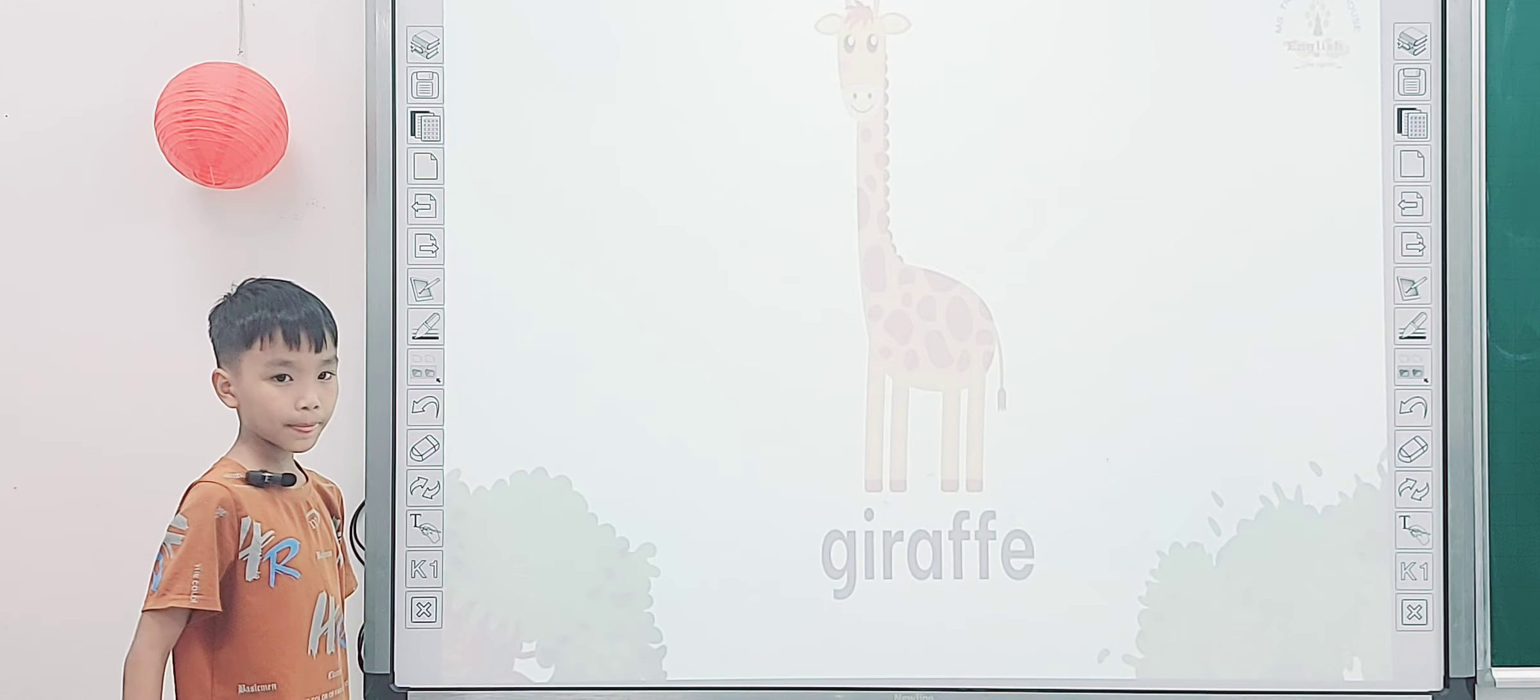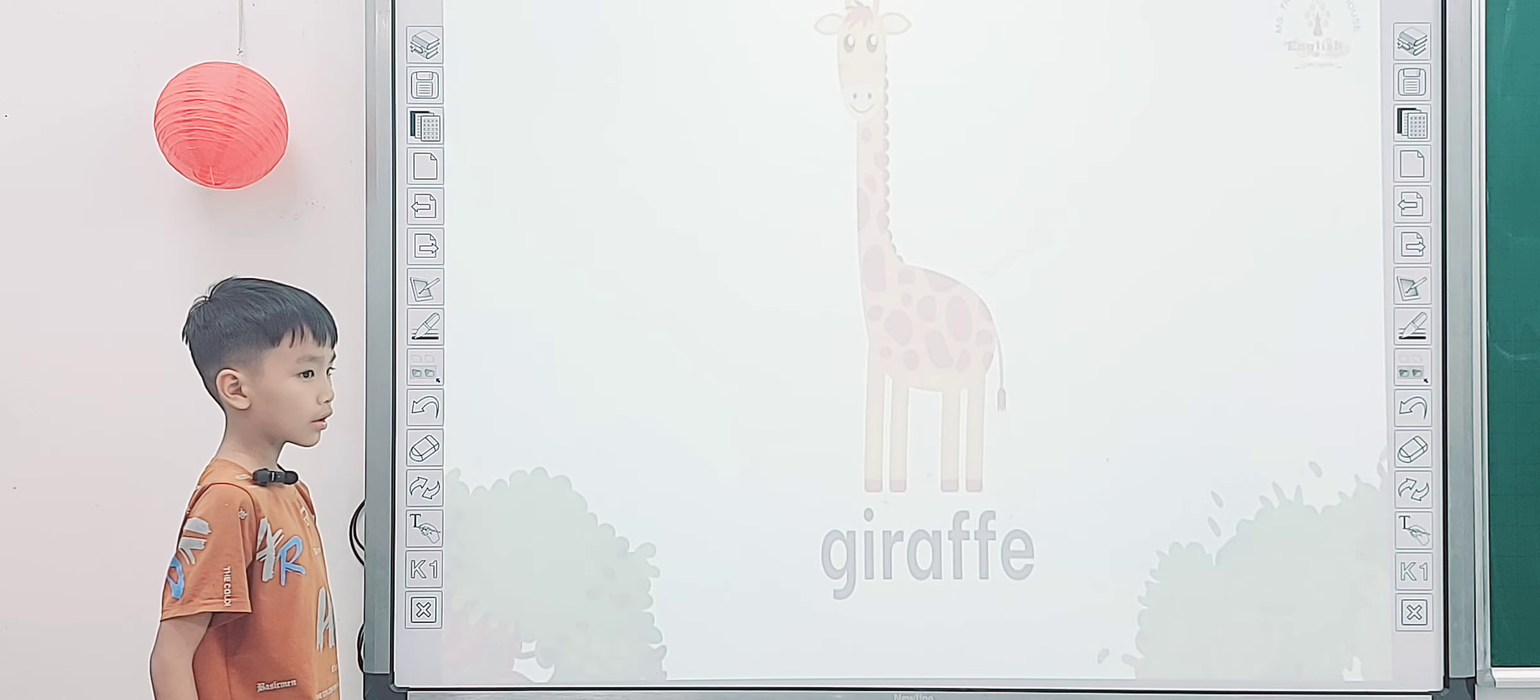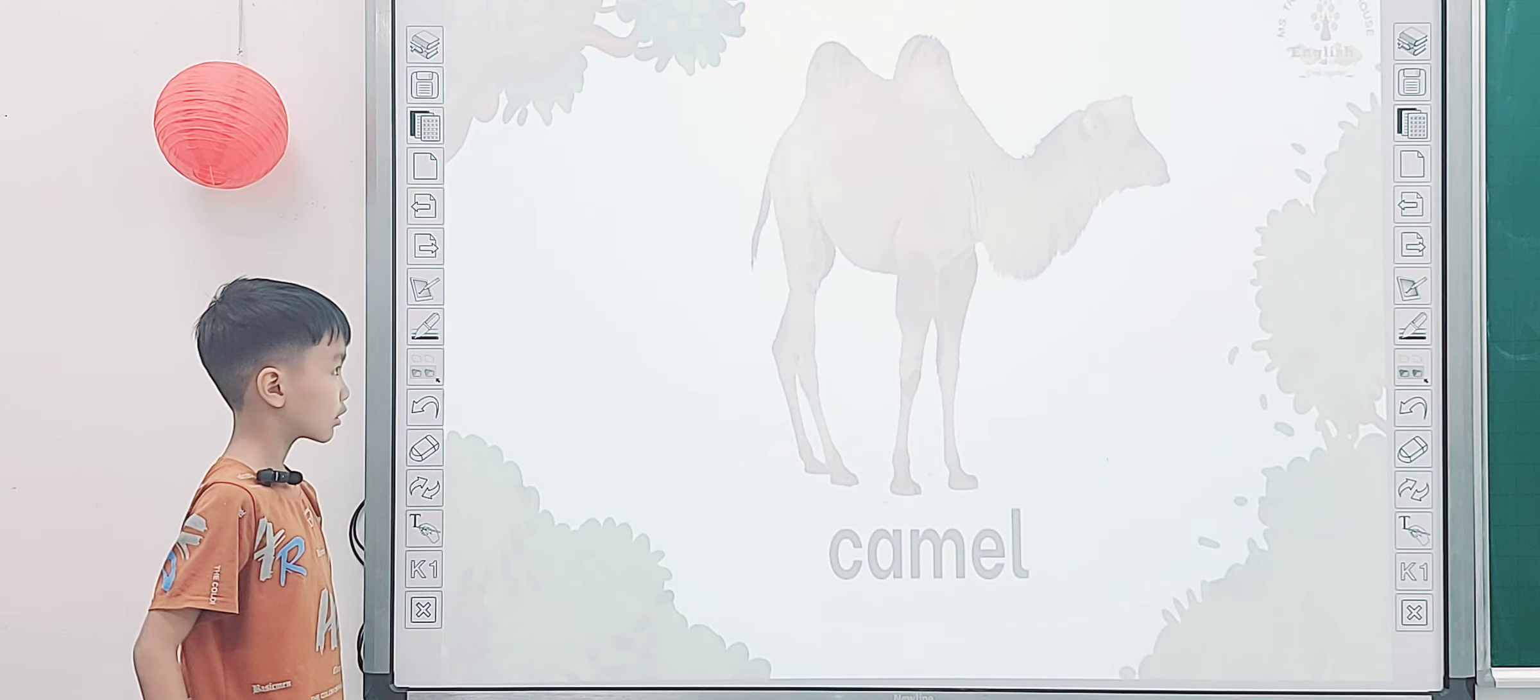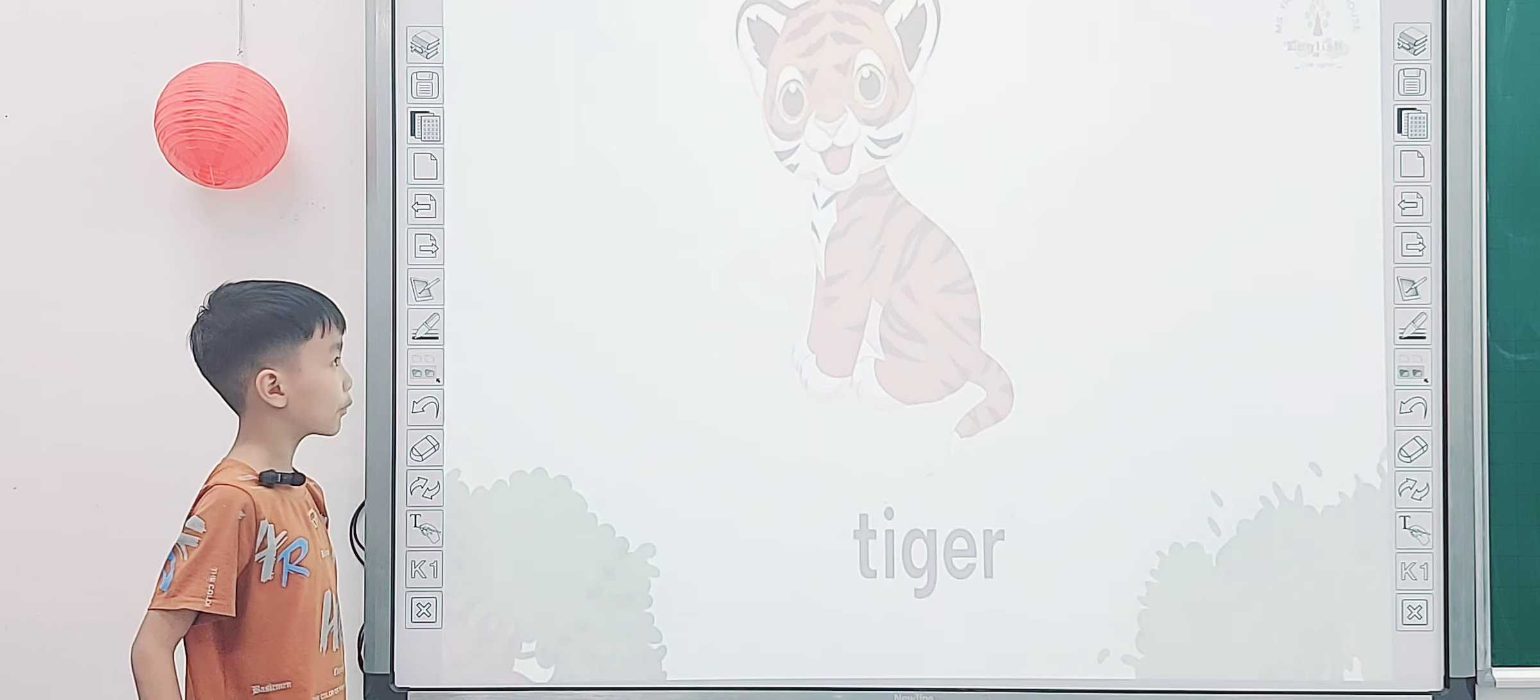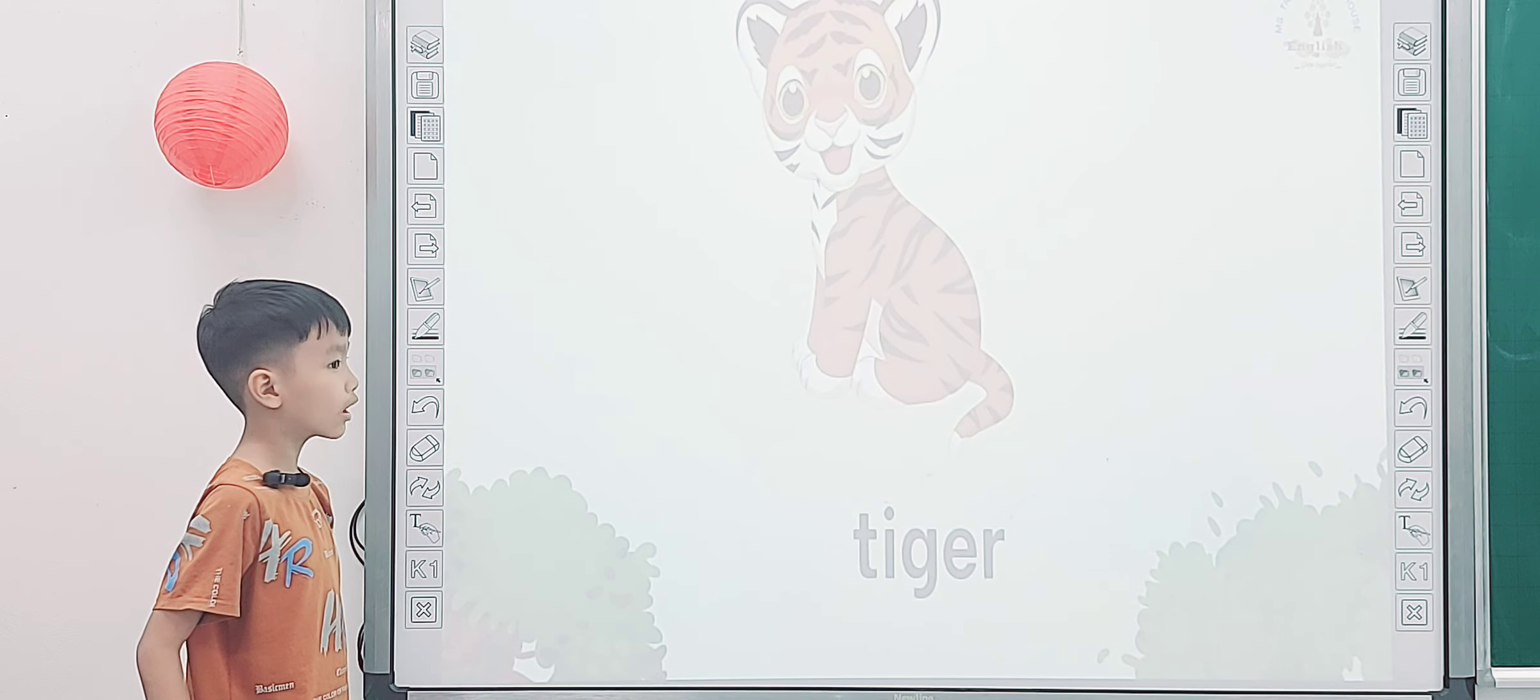And next one, what is it? It is a giraffe. So what color is a giraffe? It is orange and brown. Yeah, and what is it? Lion. It is a lion. What do you see? Camel. I see a camel. And what is it? It is a tiger.